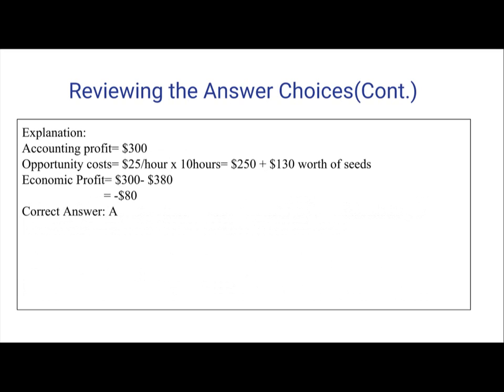Accounting profit is without the opportunity cost — remember that — so that would be $300. When we're looking for the economic profit, we have to include the opportunity cost. So we multiply $25 per hour times 10 hours, which equals $250 — the amount he could earn from teaching guitar lessons for 10 hours. And then the amount he has to pay to grow those seeds is $130. So that adds up to $380.